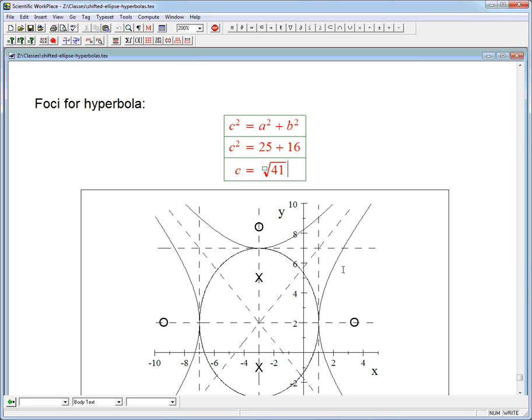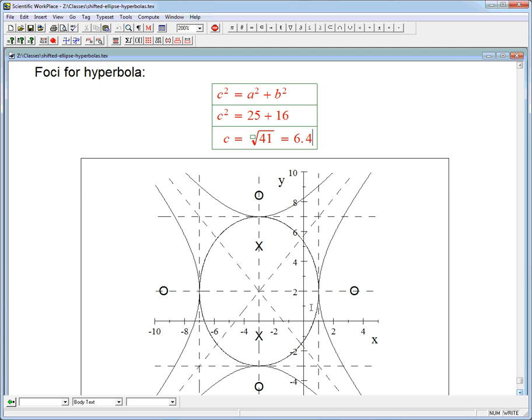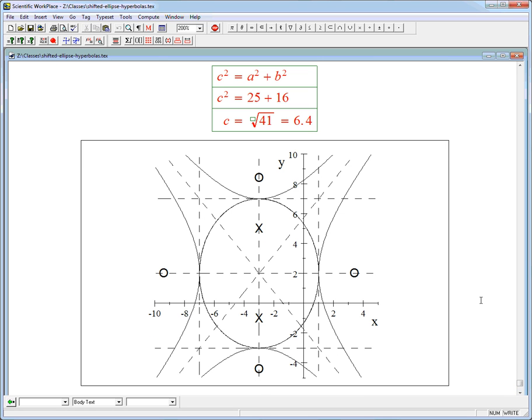And so we just go 6.4 units on either side, on all four sides of the center, to get, to plot the foci of the hyperbola. So there's a shifted example with three things. It doesn't get you parabolas in there, but that's a little, parabolas are pretty special in this way.